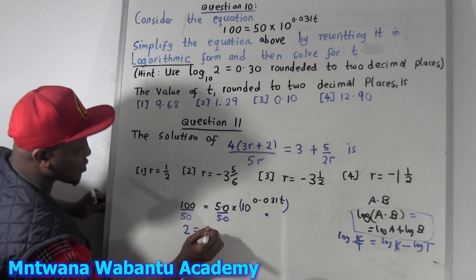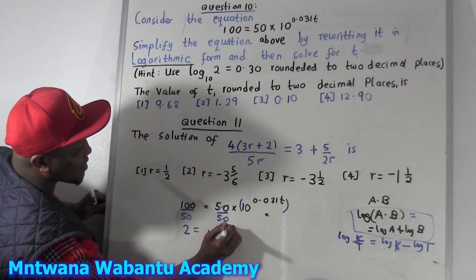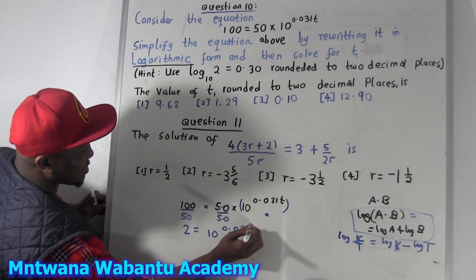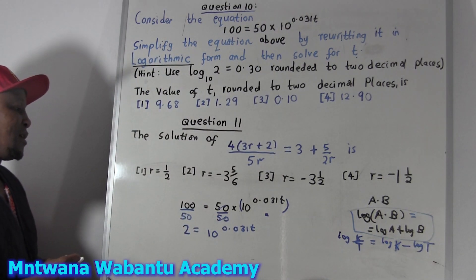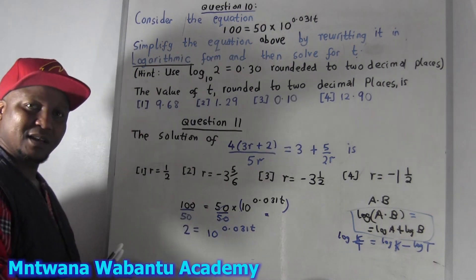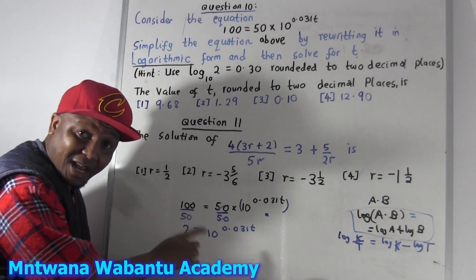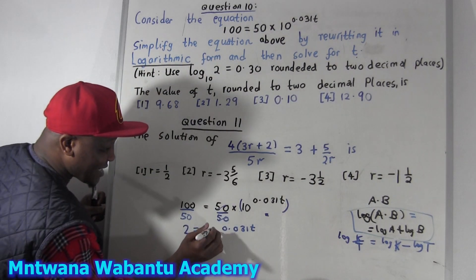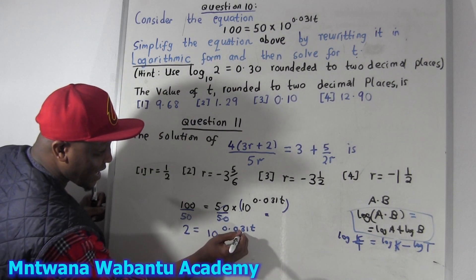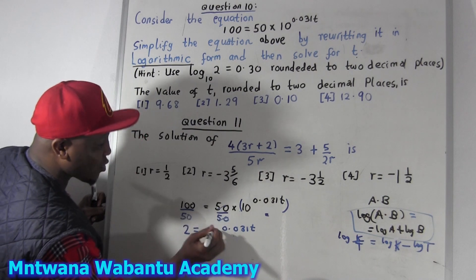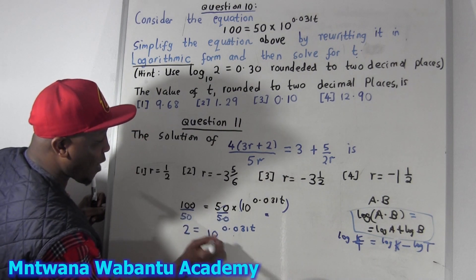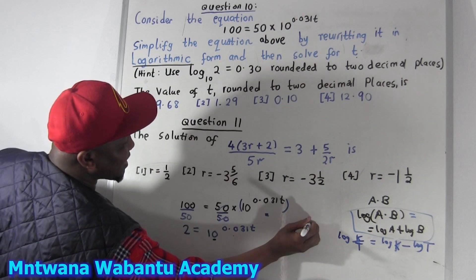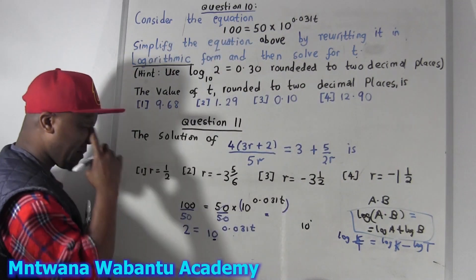So here we have 2 equal to 10 to the power 0.031T. Don't say 'oh, I have to divide by 10 again' — no, never do that. Because this 10 is attached to the exponential — it's the base and this is the exponent. Together it is one number: 10 to the power something. Since you have the power, you can apply log to everything throughout.